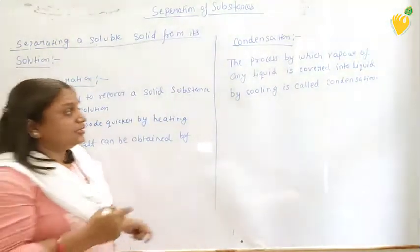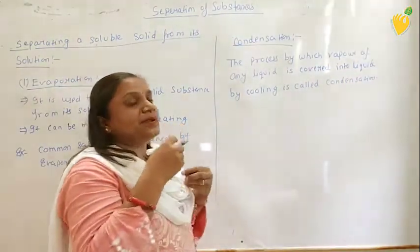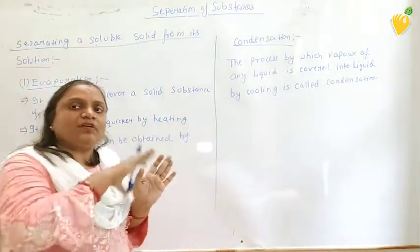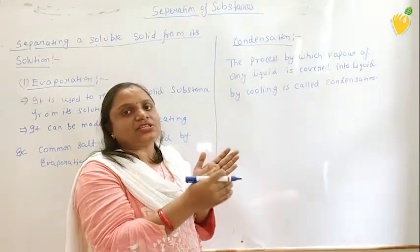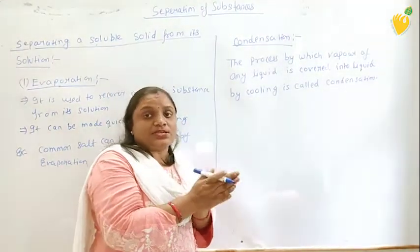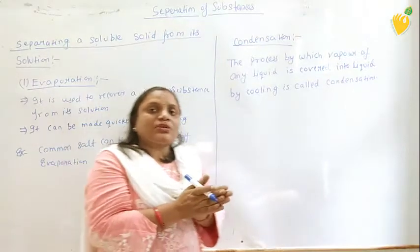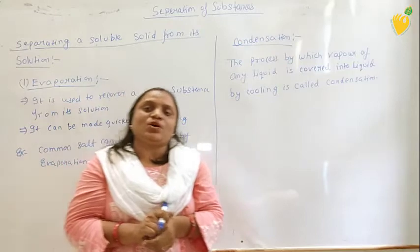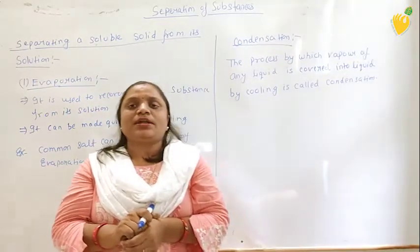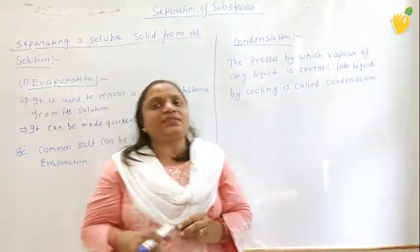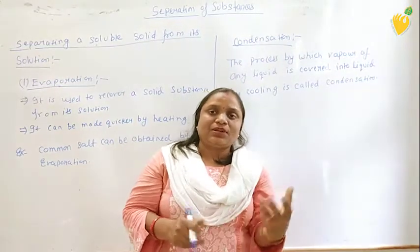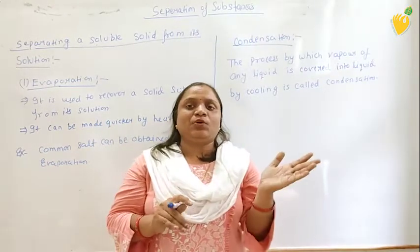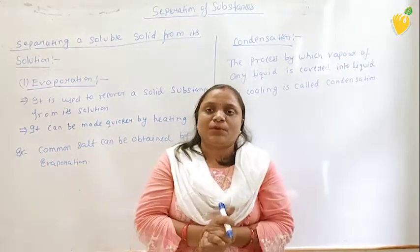One more thing: for separation of two substances, the methods are used one by one — sedimentation, decantation, filtration, evaporation, condensation — but there are certain cases in which more than one method can be used. For example, if you have an impure sample of common salt and want a pure sample, you can apply evaporation, sedimentation, decantation, and filtration together. Using these four methods, the impure salt can be converted into pure salt.